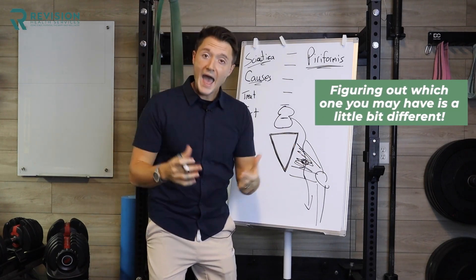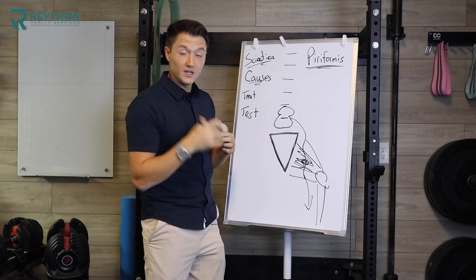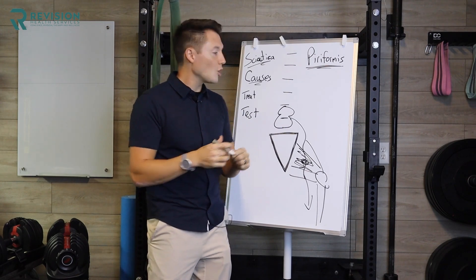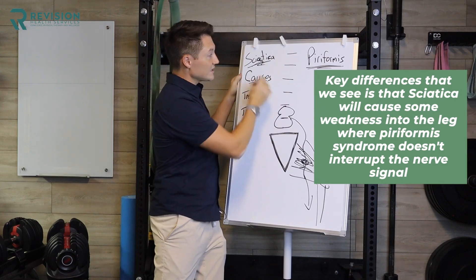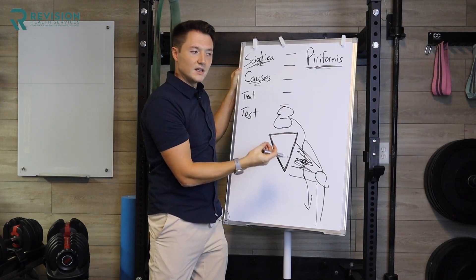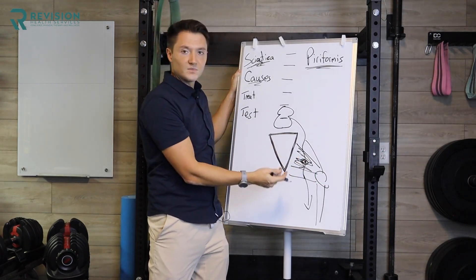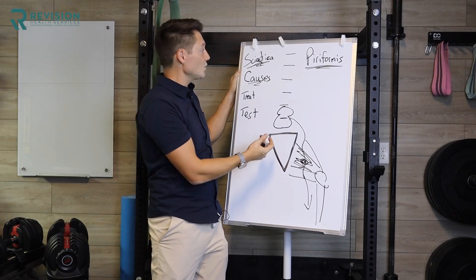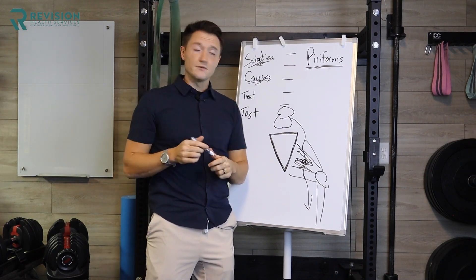To figure out which one you may have, there are some key clinical differences. In an exam — whether with a movement specialist, primary care, chiro, or PT — one big difference is that sciatica will cause weakness into the leg, whereas piriformis syndrome won't. Piriformis syndrome doesn't interrupt the nerve signal intensely enough to cause leg weakness. We also look at combined movement of your back and hips to help figure out the differences.